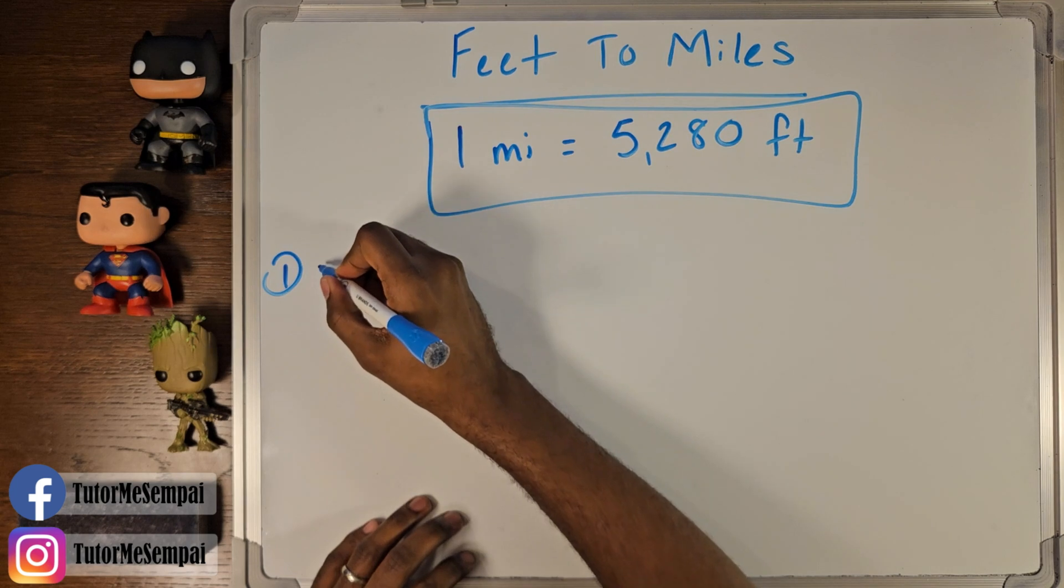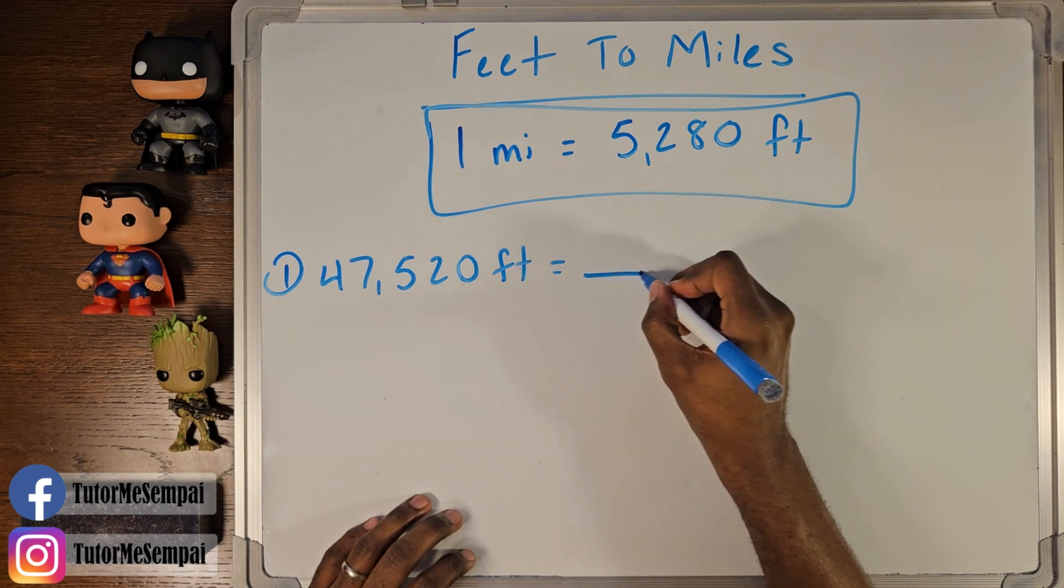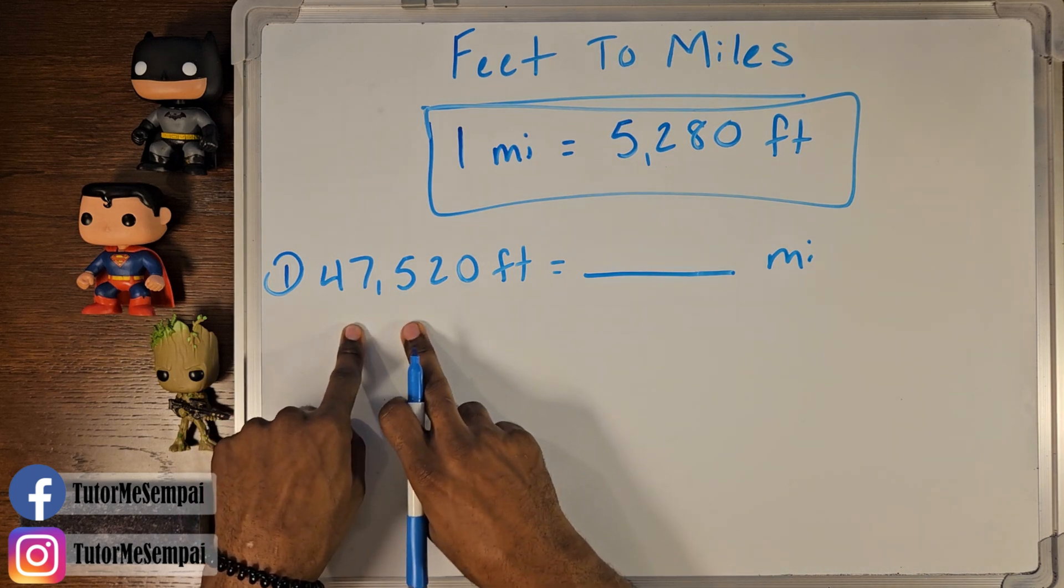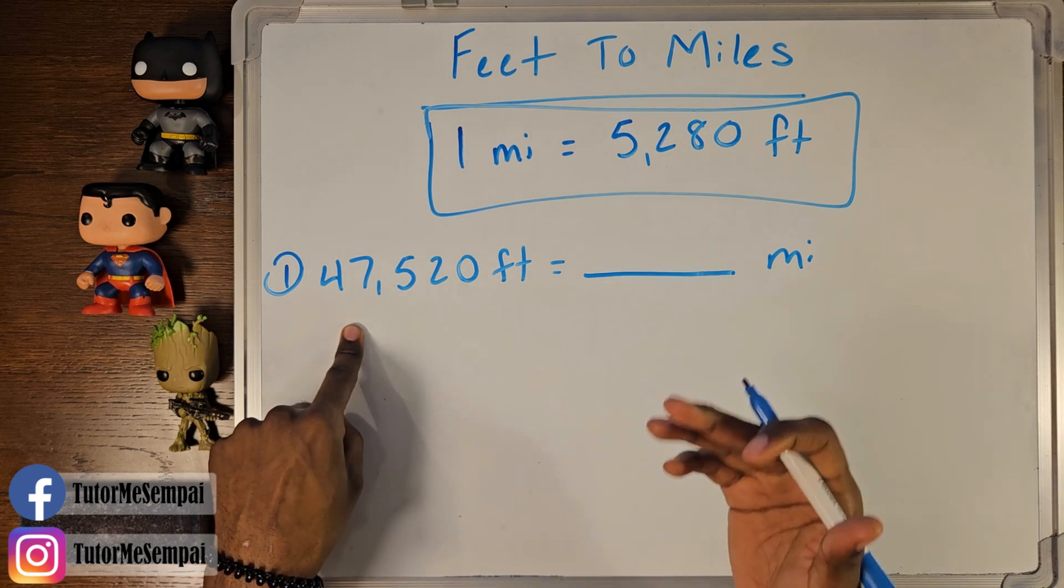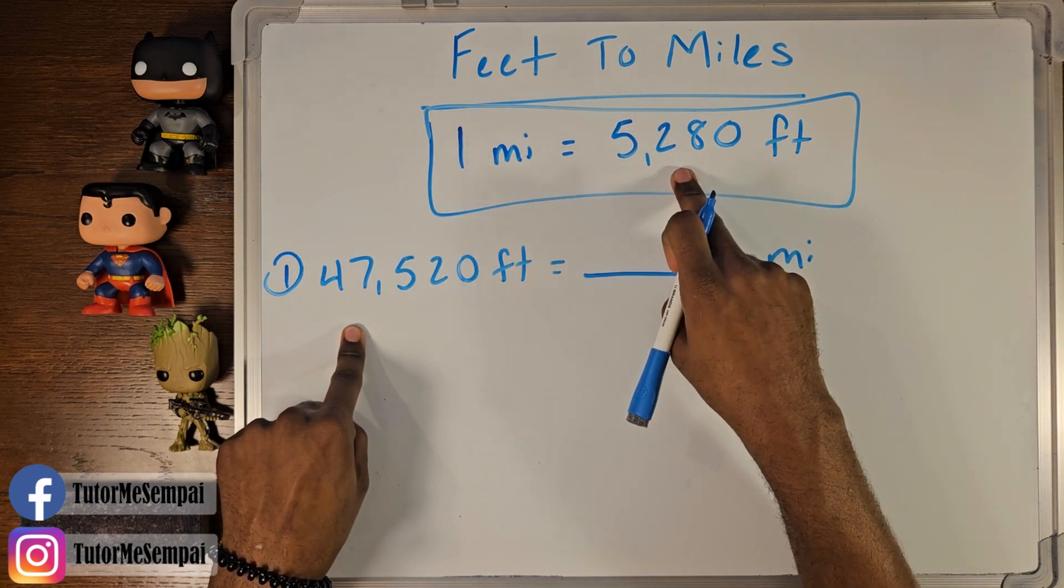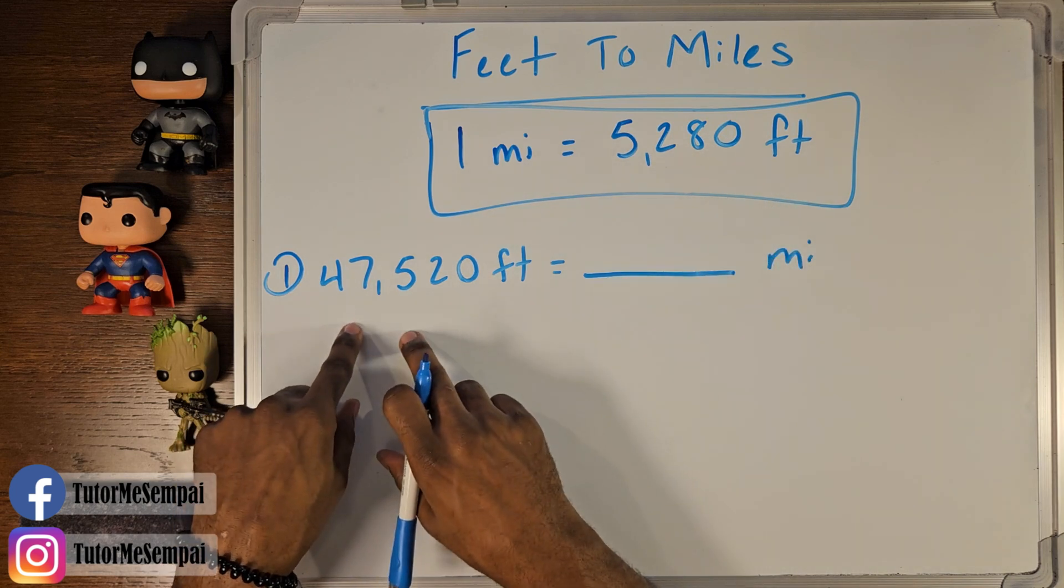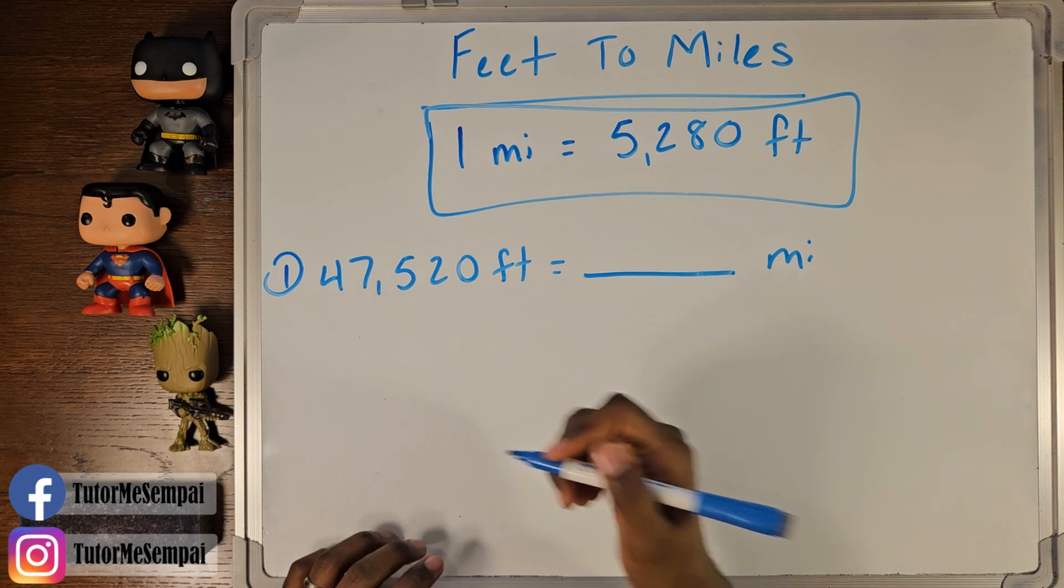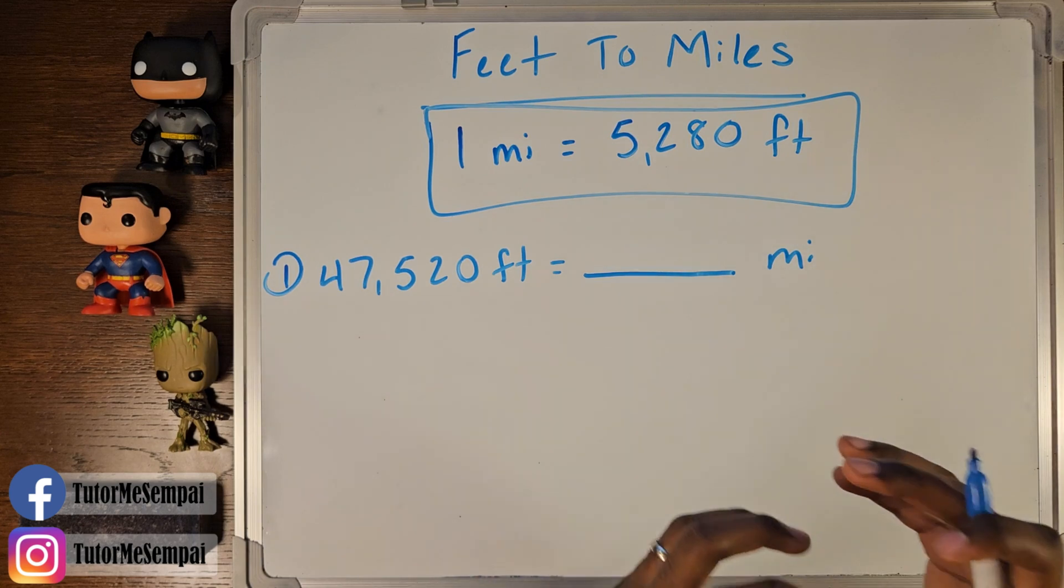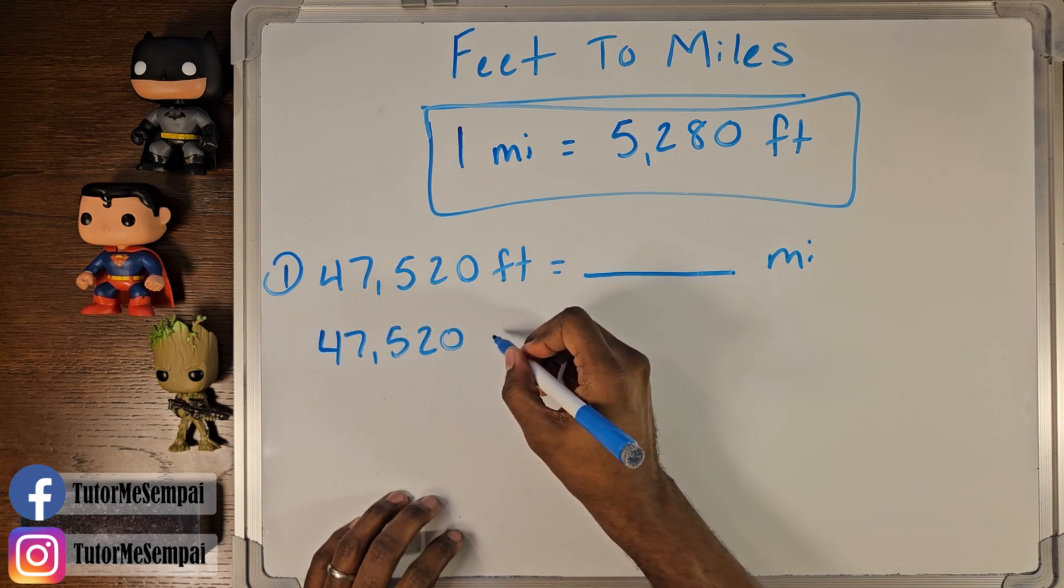So let's say we were given 47,520 feet and we want to know how many miles does that give us? Well, we have 47,520 feet. It sounds like a really big amount of miles that we're going to have, but remember, one mile is already going to be 5,000 feet. So we want to see how many groups of 5,280 can we get out of this 47,520. That tells us that we're going to have to divide. We're going to break this up into groups of 5,280. So to go about this answer, we're going to do some division.